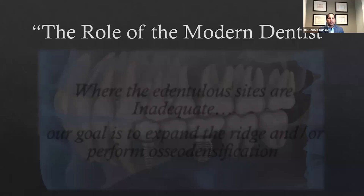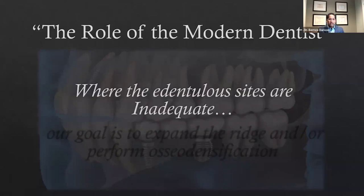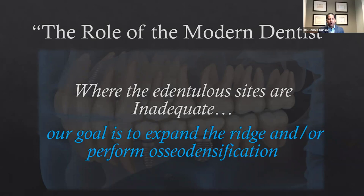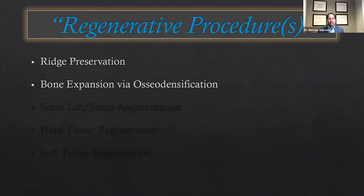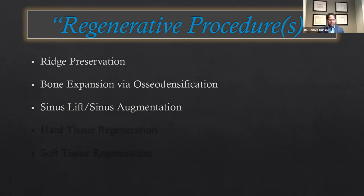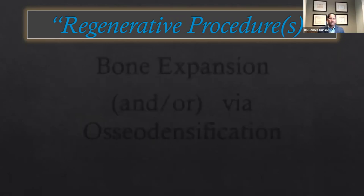Now the role of the modern dentist where edentulous sites are inadequate: our goal is to expand the ridge and/or perform osseal densification. When we talk about regenerative procedures and lack adequate bone, we have to develop skills to do ridge preservation grafts, bone expansion via osseal densification, sinus lifts and lateral Tatum sinus augmentation procedures, hard tissue regeneration via onlay grafts, and soft tissue regeneration via connective tissue grafts. Here's a case showing both bone expansion and osseal densification.